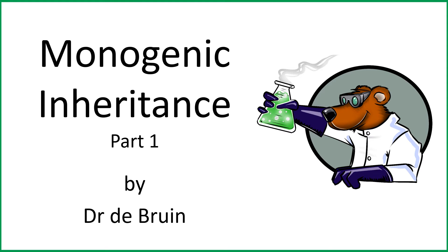This is the first of two videos covering the A-level biology topic of monogenic inheritance and monohybrid crosses. In this video we're going to look at some vocabulary — both things you should recall from GCSE and some new words — and we're also going to look at a number of examples of monohybrid crosses. In the second video we'll look at codominance and also sex-linked traits.